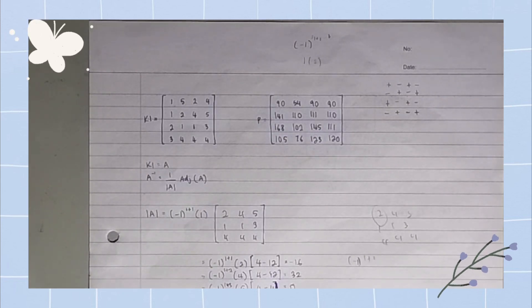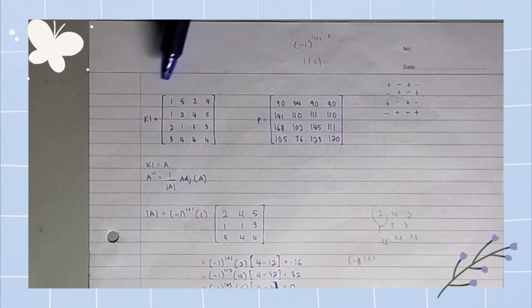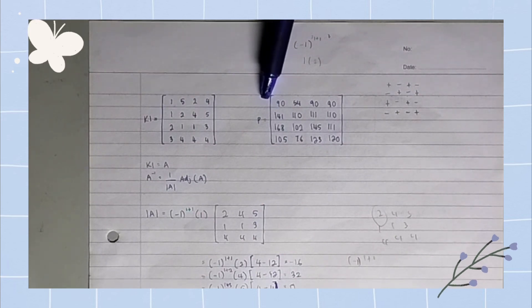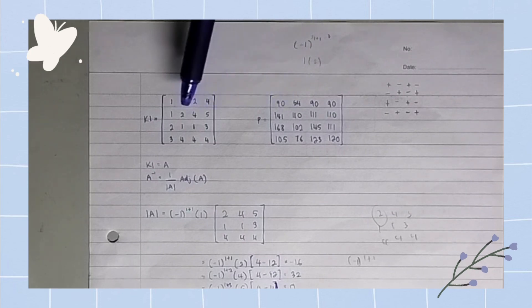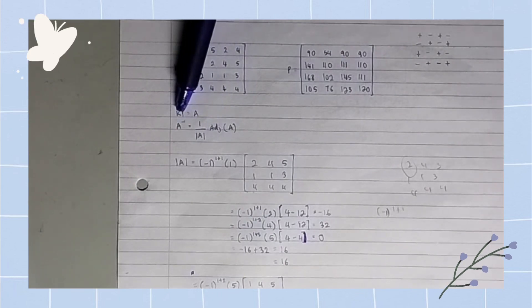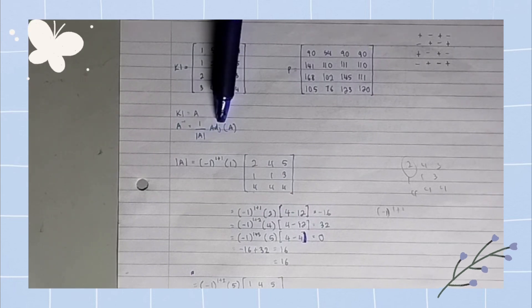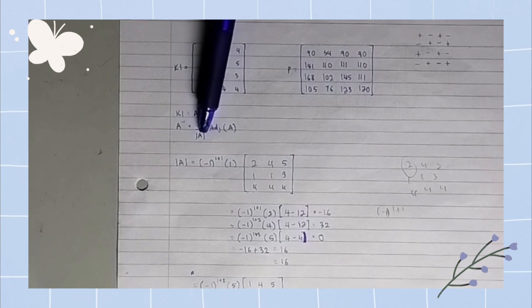Here is matrix number one. We need to find the inverse using the adjoint method. This is matrix K1, and this is the matrix P, which is the matrix given to be multiplied with the inverse of K1 in order to decrypt the secret code. We need to find the inverse using this formula: one over the determinant of A, times the adjoint of A, which is K1.